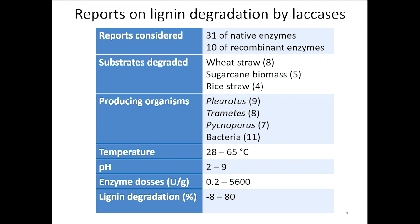What I did was to search for papers that reported lignin degradation by using laccases, and I wanted to compare the results obtained with native and recombinant laccases. We found a big difference in the amount of reports with these two kinds of enzymes: 31 reports on native enzymes and only 10 reports about recombinant enzymes. About the substrates that the authors utilized, the most common is wheat straw — we found eight reports. We also found five reports about different parts of sugar cane that are residues of the sugar producing process, and also some with rice straw.